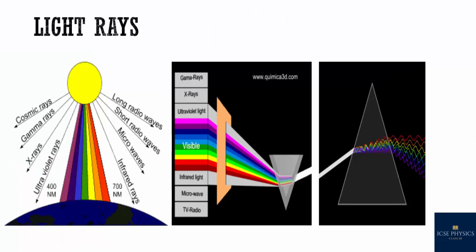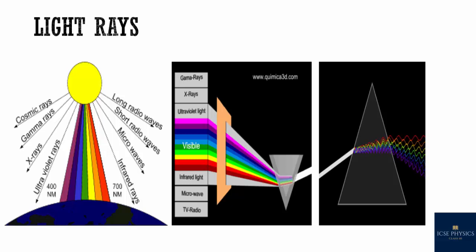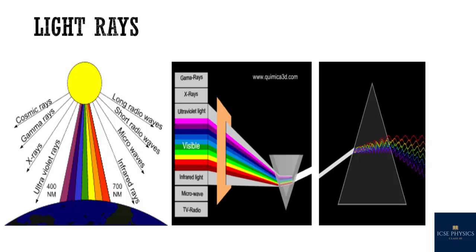Light is vitally important to us. Light arrives on our planet after a speedy trip from the sun. The sun is a nuclear fireball which throws energy in all directions. The light we see is simply one part of the energy that the sun makes, which our eyes can detect. The light energy travels in the form of electromagnetic energy waves.